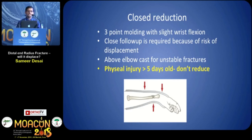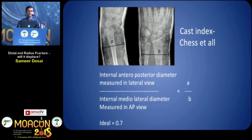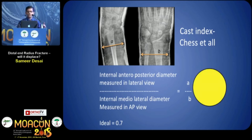Use an above-elbow cast if you are suspecting an unstable fracture. For a physeal injury that is greater than 5 days old, please do not try to reduce because there is a risk of physeal damage. Once you have given the cast, you must look at the cast index — measure the internal anteroposterior diameter on the lateral view and divide it by the internal mediolateral diameter measured on the AP view. Ideally it should be 0.7, meaning the cast should not be a perfect circle.